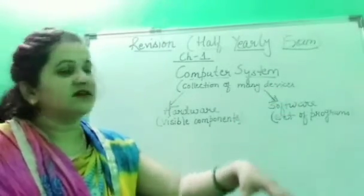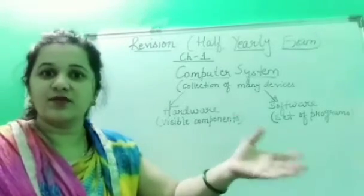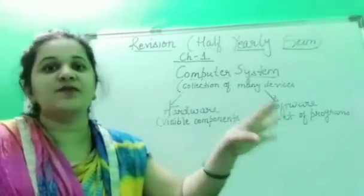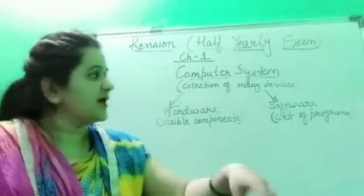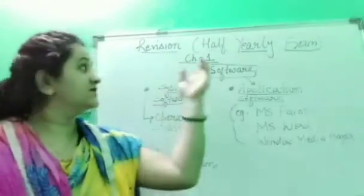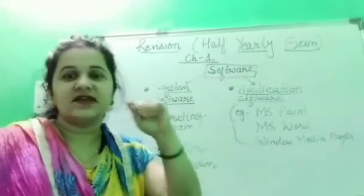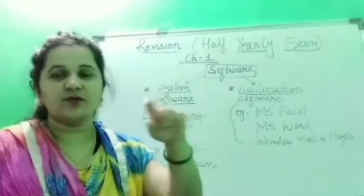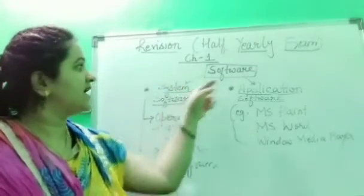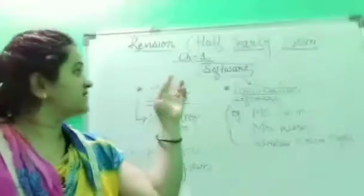Software is a set of programs through which a computer works — a set of instructions given to the computer so that it can perform a particular task. Software is divided into two parts: system software and application software. System software is software which helps in managing and controlling the functions of a computer.